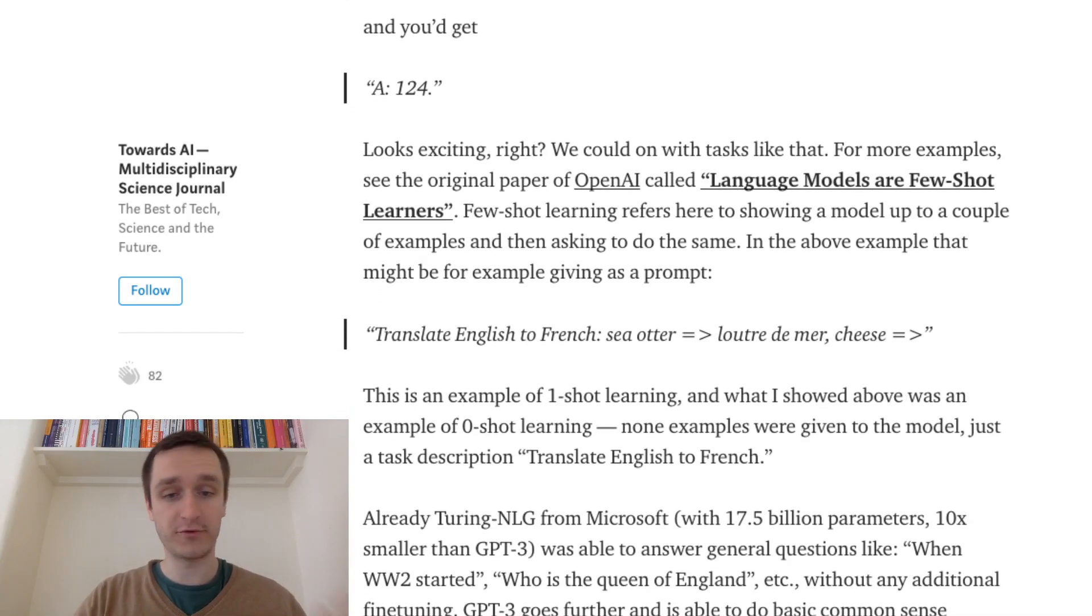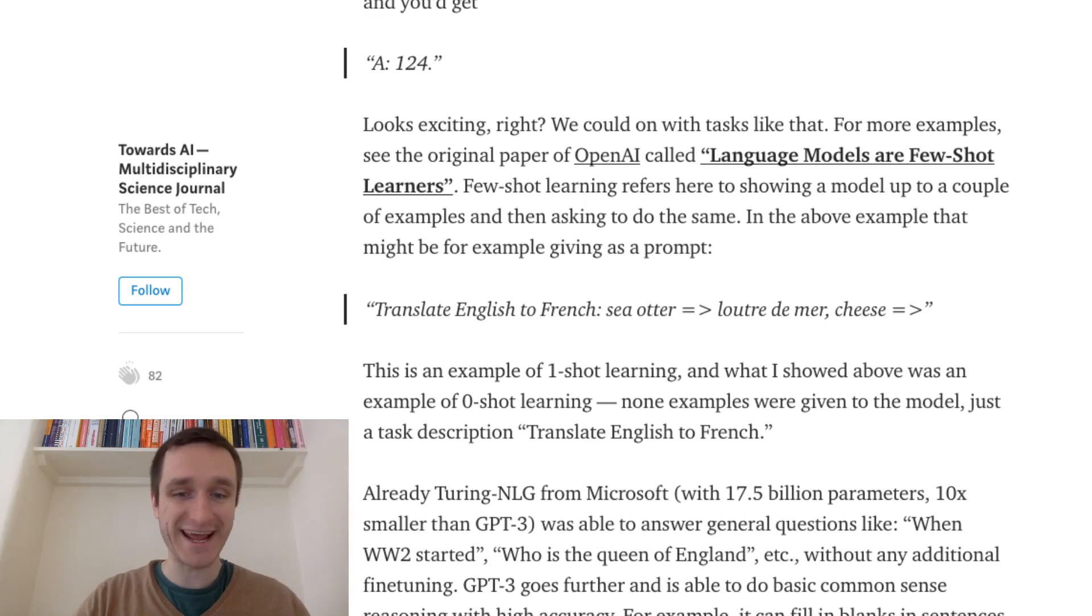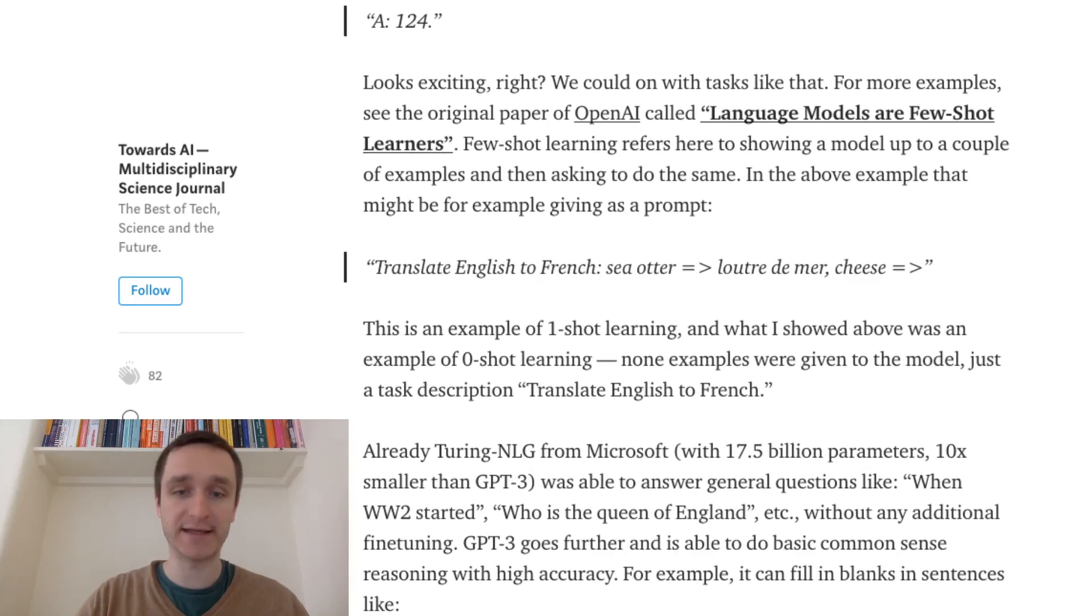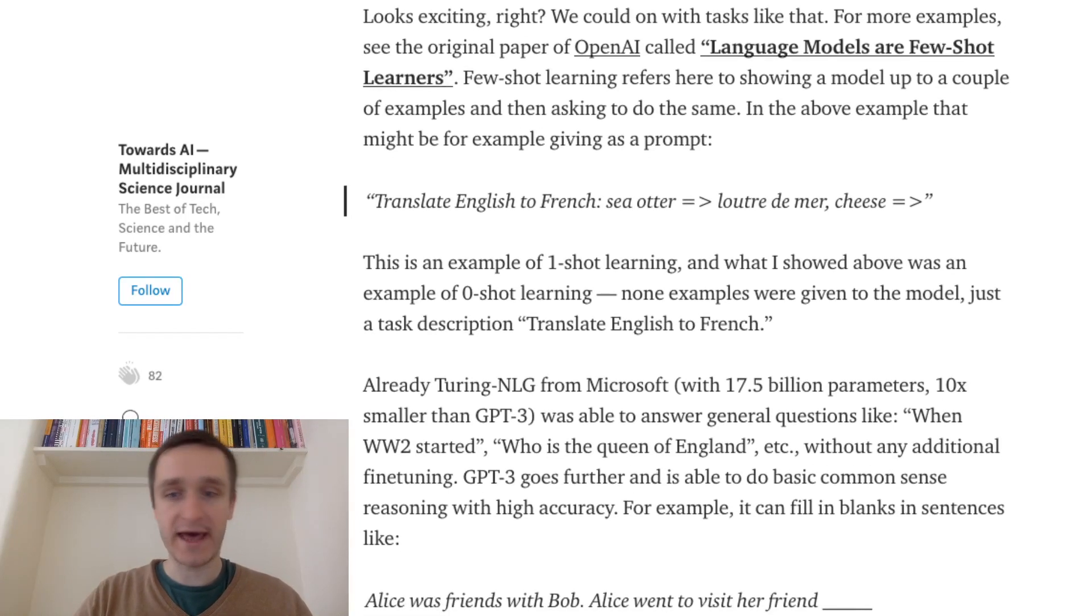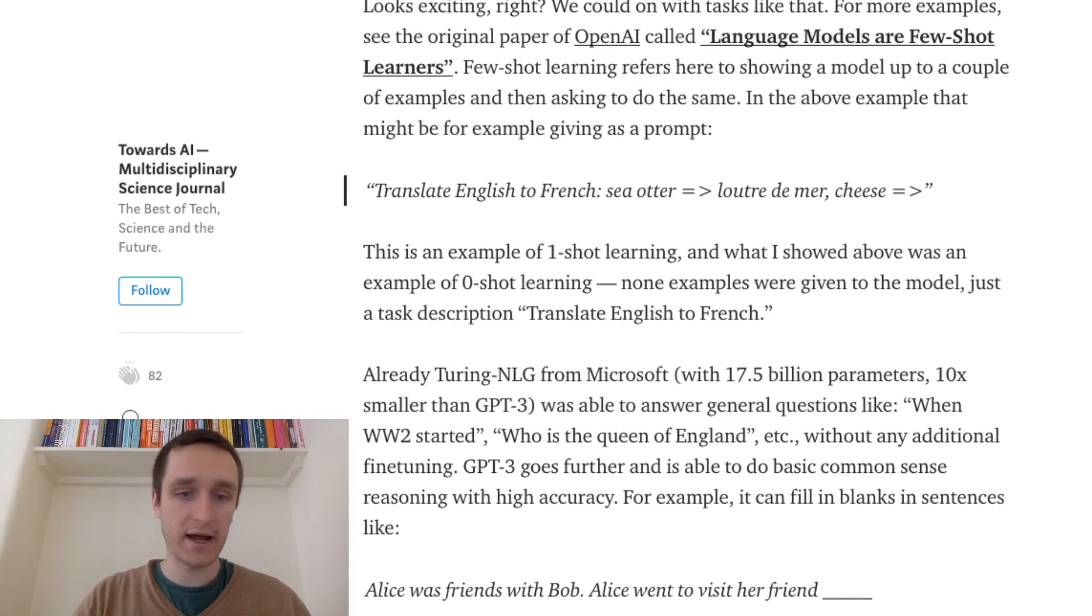So actually, if you go to the previous model, already Turing-NLG is able to do that to some extent. That was the model with 70 billion parameters. So it was able to answer questions like when World War II started, who is the Queen of England without any additional fine-tuning again. So that's the important point.